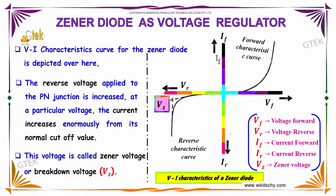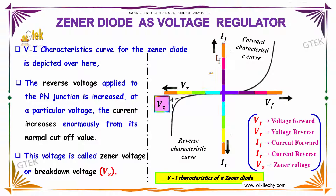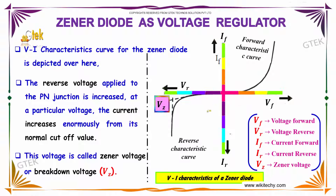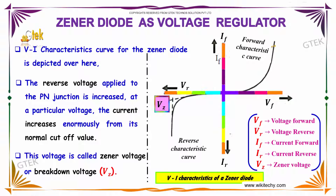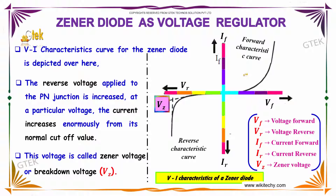Now let's see how we are able to use the Zener Diode as a voltage regulator. The voltage versus current characteristics curve for the Zener Diode is depicted. As the reverse voltage applied to the PN junction is increased, at a particular voltage the current increases enormously from its normal cut-off value. This voltage is called Zener Voltage, or Breakdown Voltage.